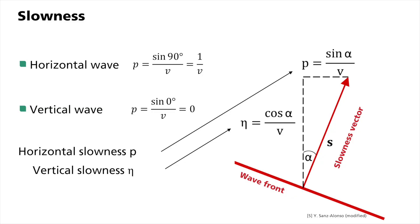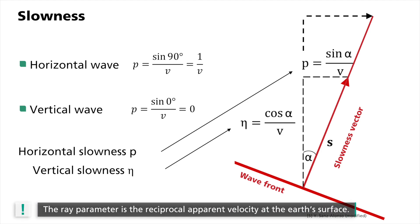Imagine how the wavefront in the figure would make its way back up. It would strike the earth's surface at exactly 1 divided by p. Hence, the ray parameter is the reciprocal apparent velocity at the surface. And because p is constant, this applies regardless of the angle of emergence, actual propagation velocity and wave type.